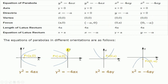This chart is very important because many engineering mathematics questions can be solved directly using it. It shows four standard parabolas: y² = 4ax, y² = −4ax, x² = 4ay, and x² = −4ay.